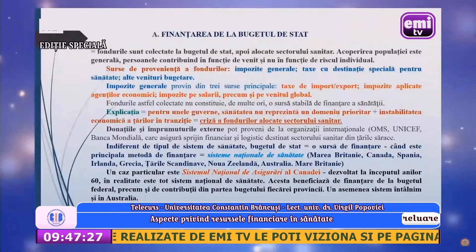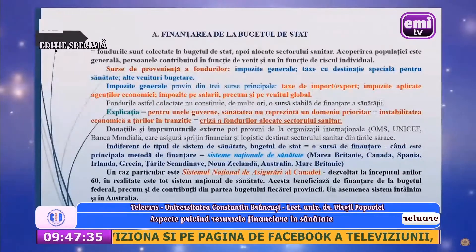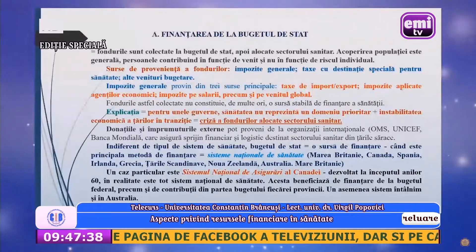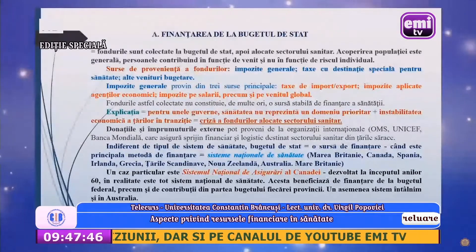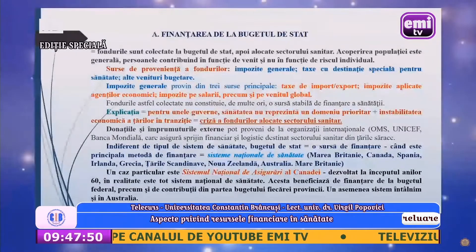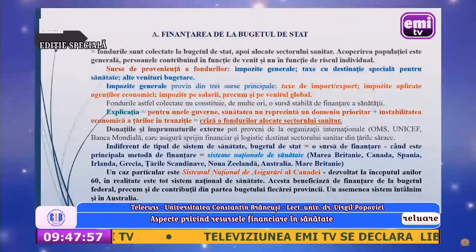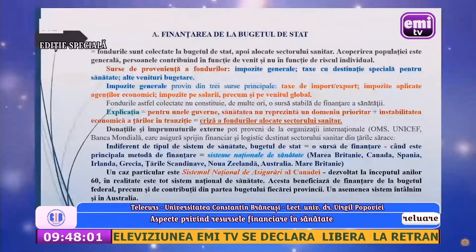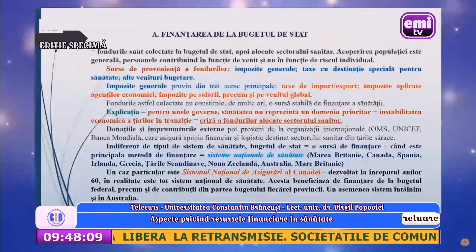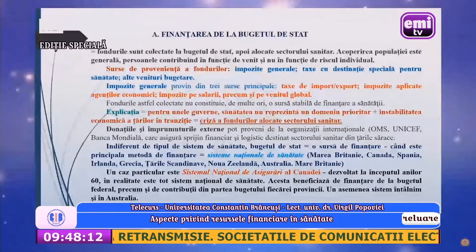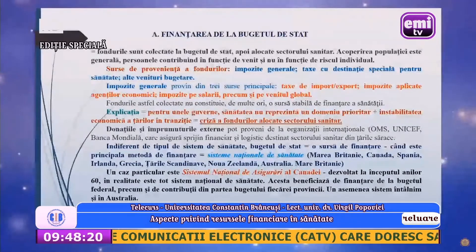O primă modalitate din cele cinci o constituie finanțarea de la bugetul de stat. Această modalitate presupune ca fondurile să fie colectate la bugetul de stat, apoi alocate sectorului sanitar. Acoperirea populației este una generală, persoanele contribuind în funcție de venit și nu în funcție de riscul individual datorat mediului în care trăiesc, condițiilor de viață, antecedentelor personale și vârstei. Sursa de proveniență a fondurilor o constituie impozitele generale, taxe cu destinație specială pentru sănătate și alte venituri bugetare.